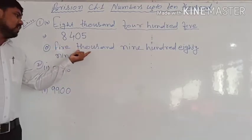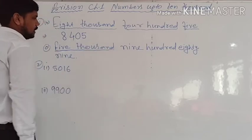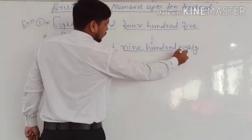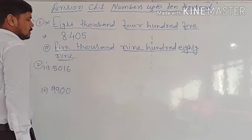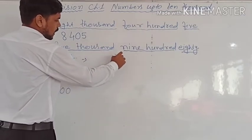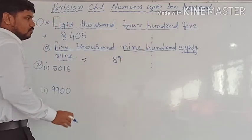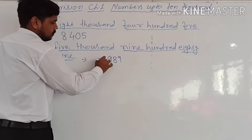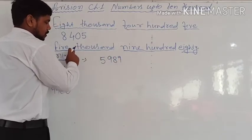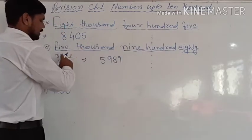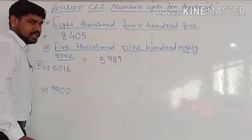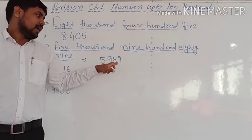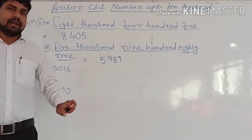Next: five thousand nine hundred eighty-nine. Thousands place: 5. Hundreds place: 9. Tens place: 8. Ones place: 9. So the number is 5,989. Very easy — ones, tens, hundreds, thousands. Then 900 and 89. So 5,989.